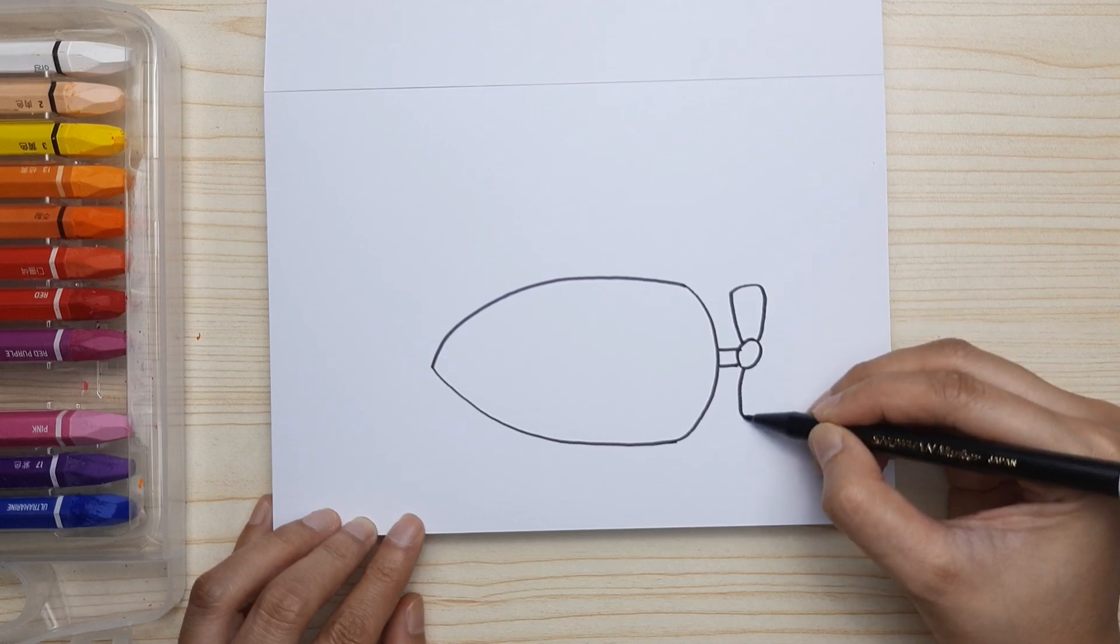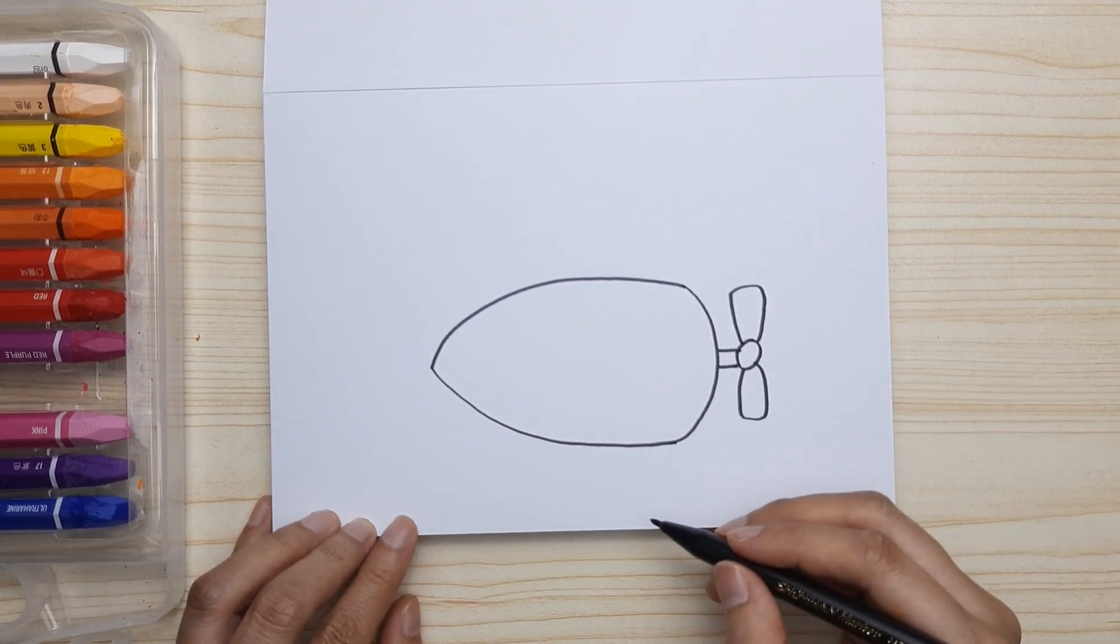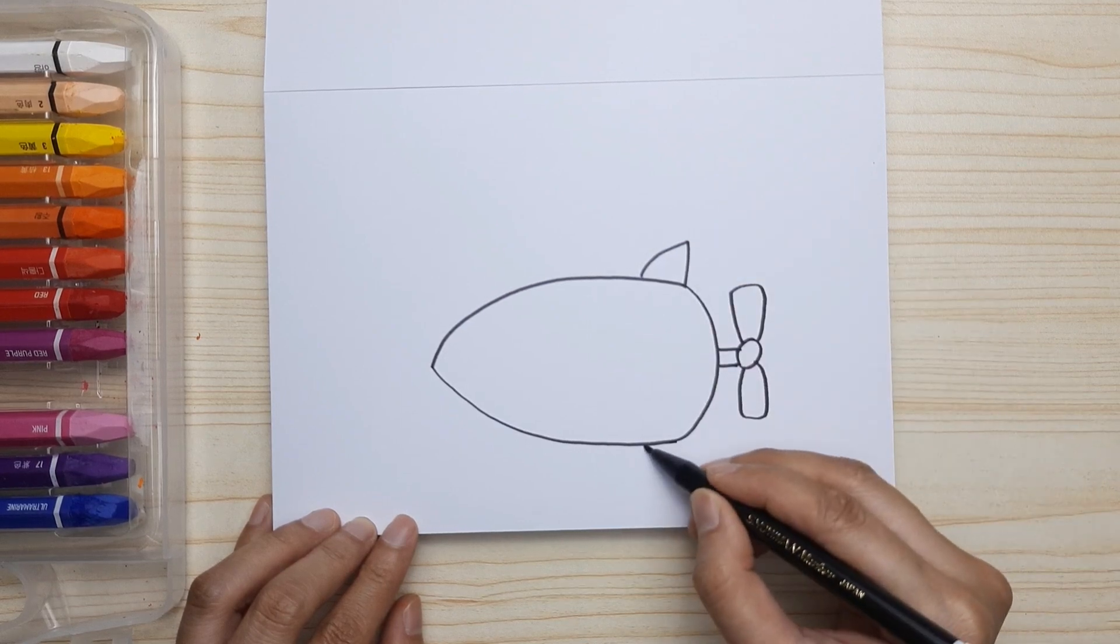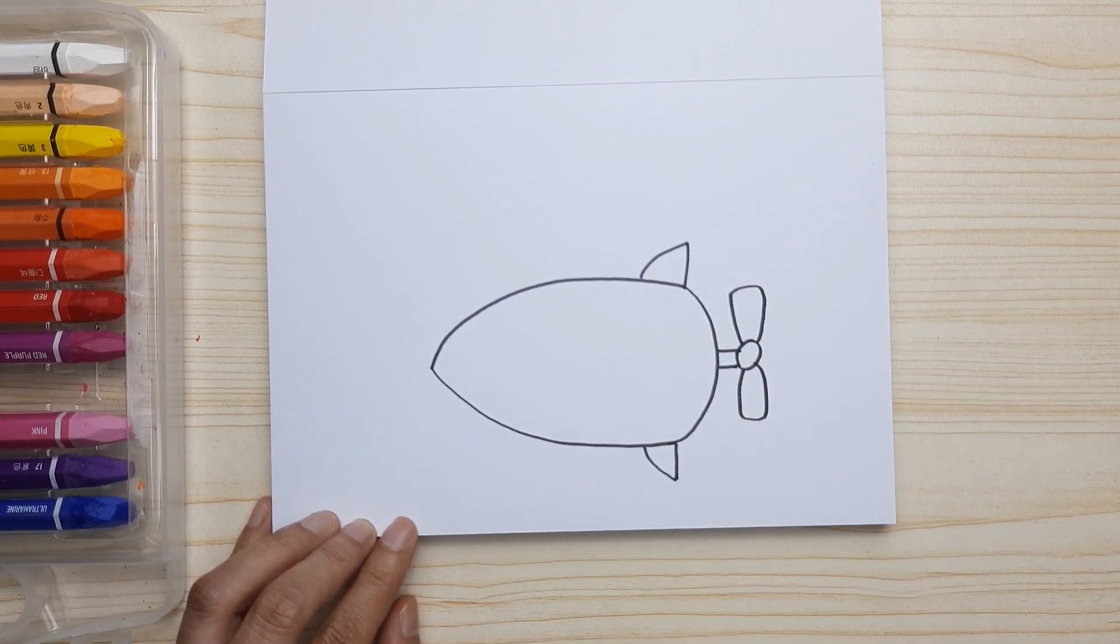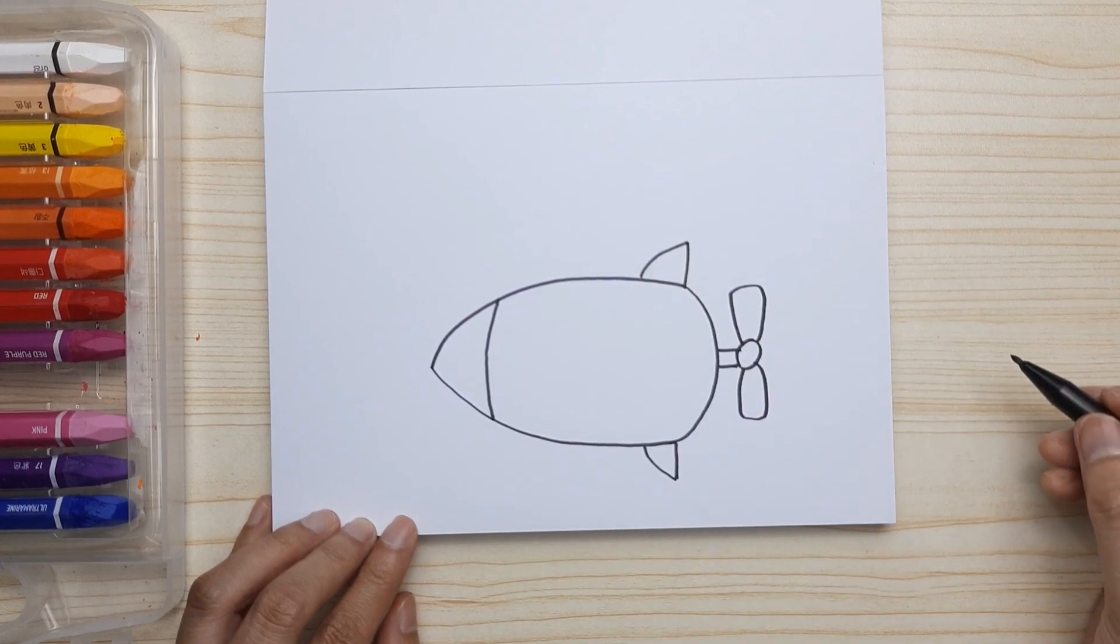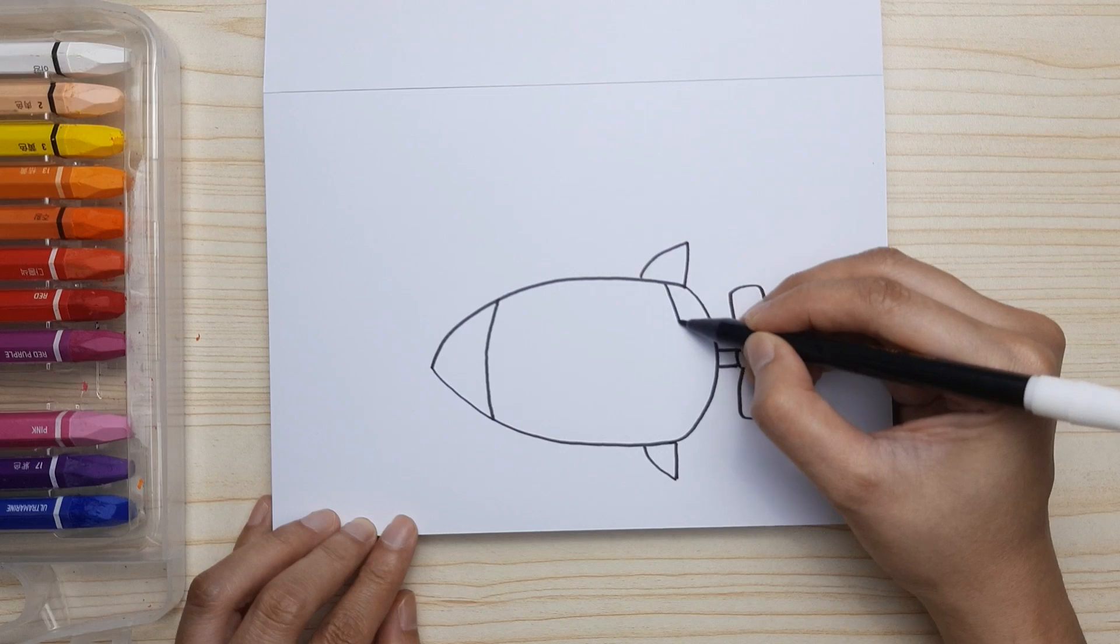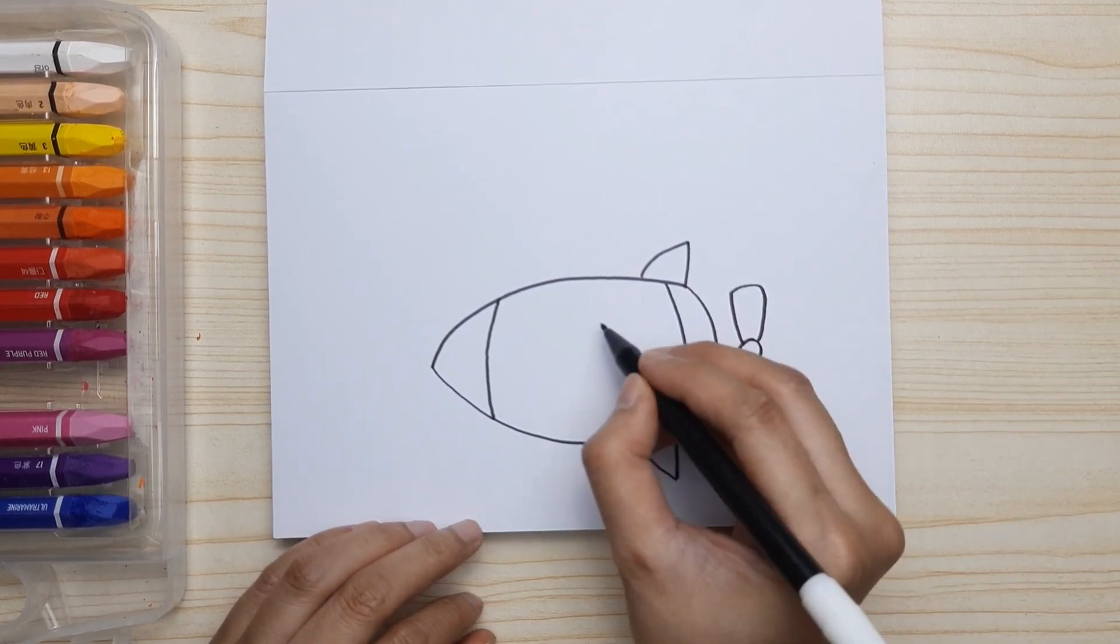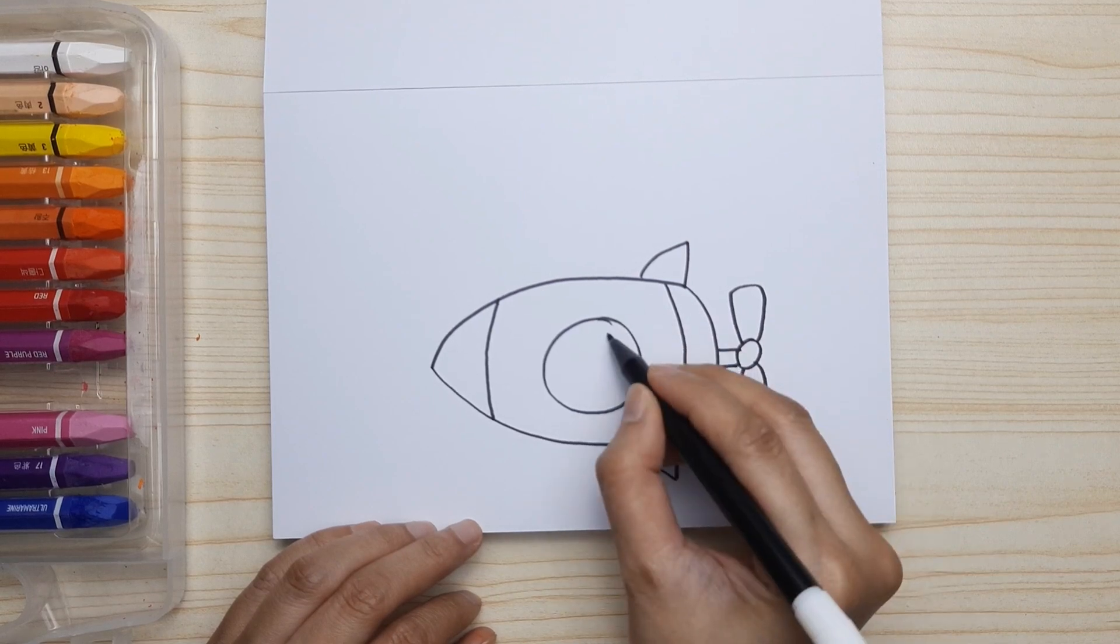Then the diving plane. Then draw the lines to separate the front and the back, because we're going to color them and make the submarine colorful. And the window - circle and the frame.